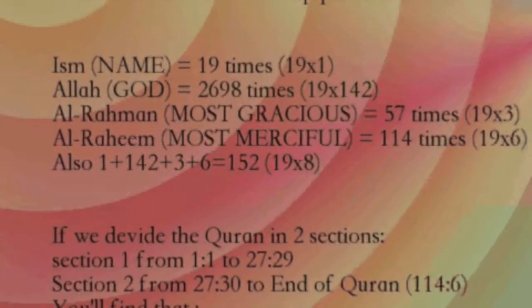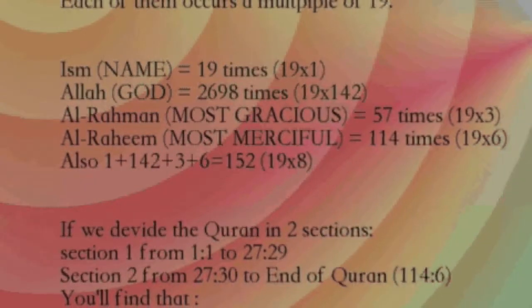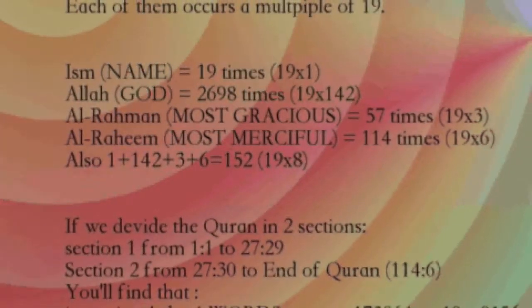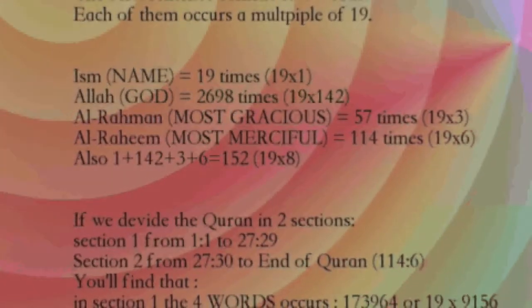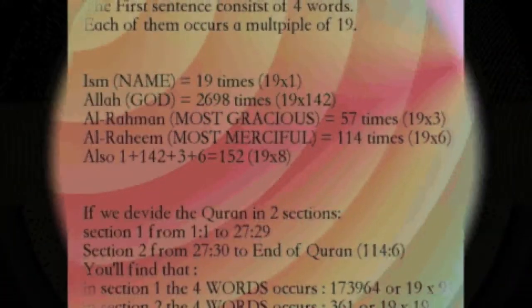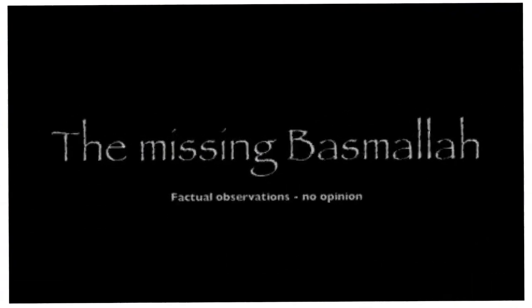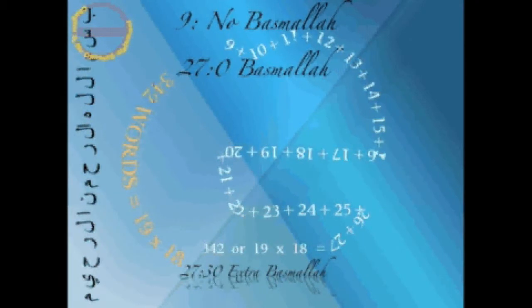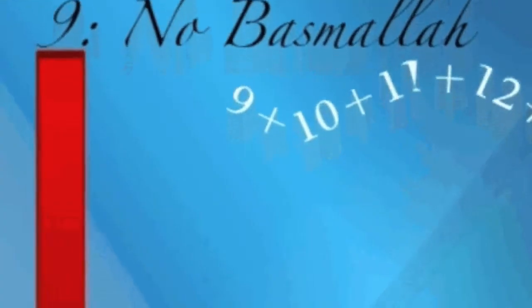21. Opening statement is missing from chapter 9, but compensated in chapter 27, verse 30. This restores the frequency of this crucial statement to 114, 19 times 6. 22. Between the missing statement, chapter 9 and the extra statement, chapter 27, there are 19 chapters. Every single chapter of the Quran starts with a 19 letters sentence known as the Basmela, or the opening statement. Only chapter 9 does not have an opening statement and only chapter 27 has two opening statements.